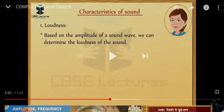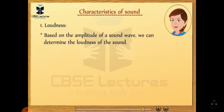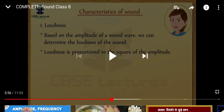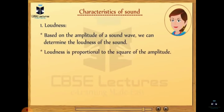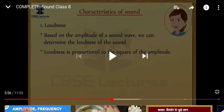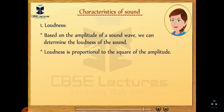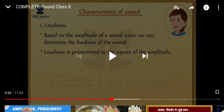The next property of sound is pitch. Before discussing pitch, note that loudness is proportional to the square of amplitude. This means if the amplitude is doubled, the loudness becomes 4 times. And if the amplitude is halved, the loudness becomes one-fourth. This loudness of sound is expressed in decibels, written as dB.